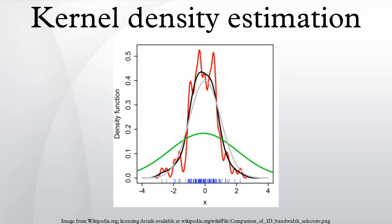If the bandwidth is not held fixed, but is varied depending upon the location of either the estimate or the samples, this produces a particularly powerful method termed adaptive or variable bandwidth kernel density estimation.